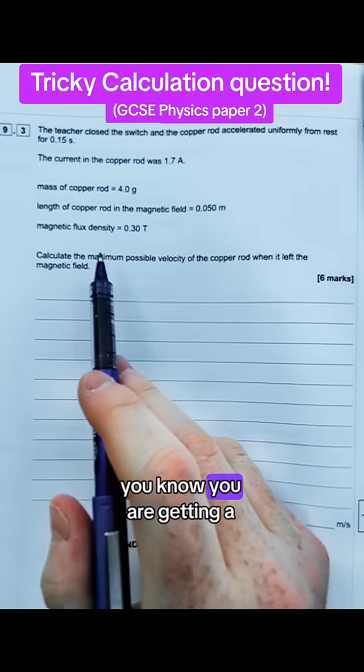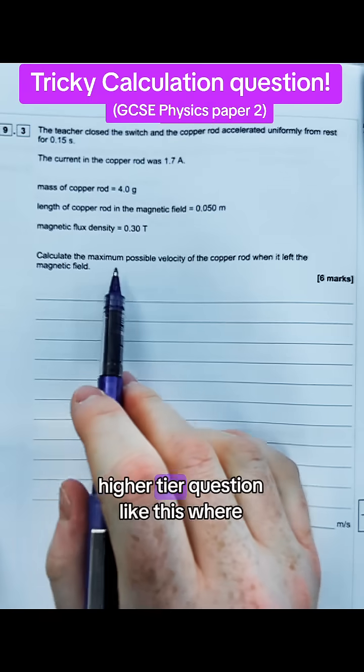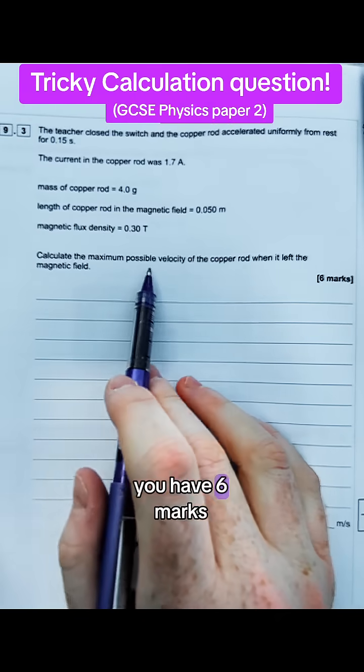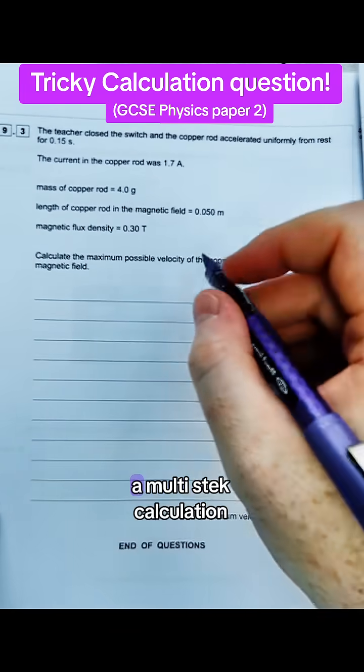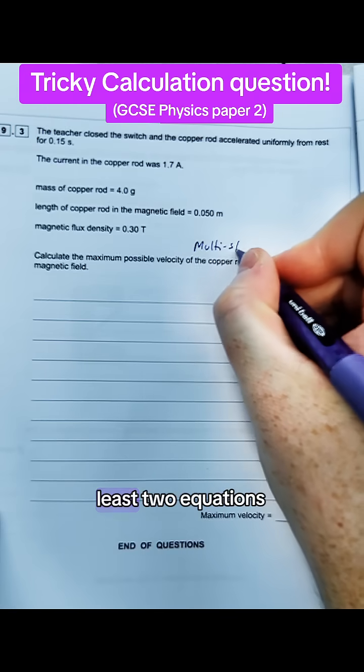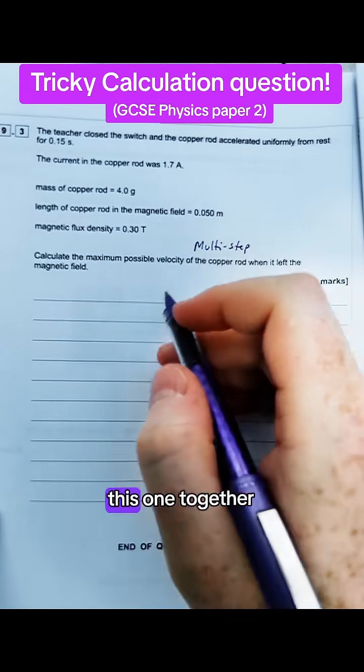If you are a separate science student, you'll know you're getting a higher tier question like this where you have six marks and it's a calculation. It's called a multi-step calculation because you need to have at least two equations. So let's have a go at this one together.